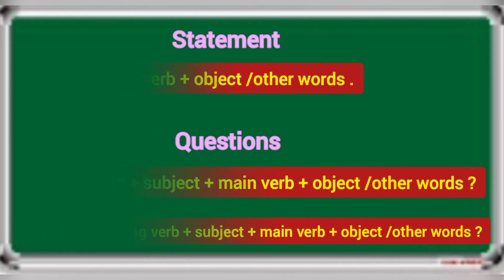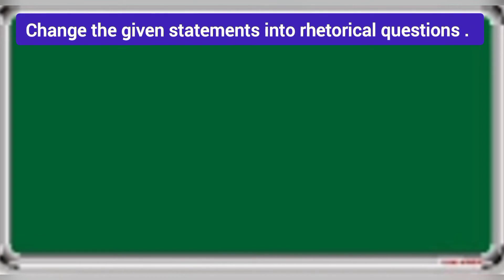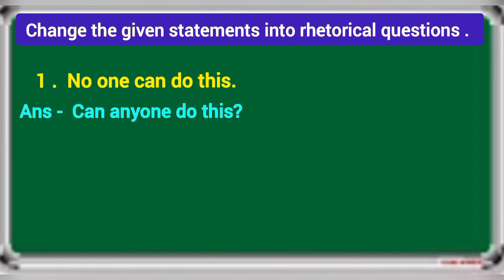Now we have to change statements into rhetorical questions. First statement: no one can do this. The rhetorical question is: can anyone do this? In the statement, if there is 'no one' or 'nobody', you have to use 'anyone' or 'anybody'. Note that if the statement is negative, the rhetorical question will be affirmative, and if the statement is affirmative, the rhetorical question will be negative.